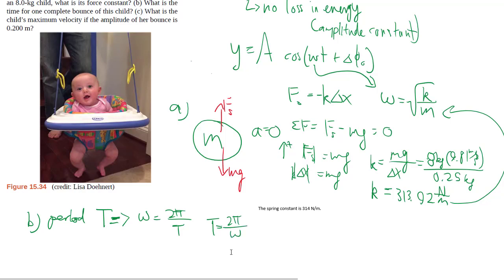So then when you find omega, we know omega is the square root of k over m. We now have k, and we have also m, which is the mass of the baby shaking up and down.